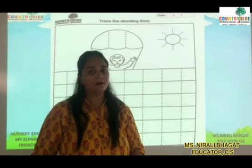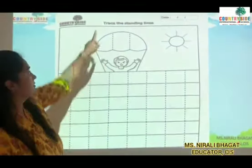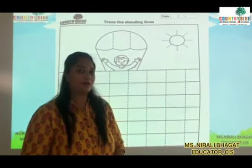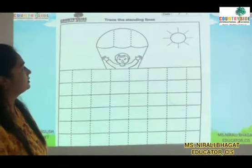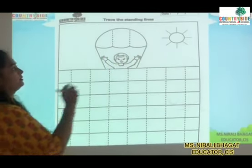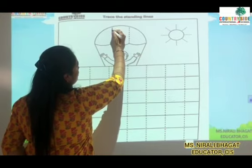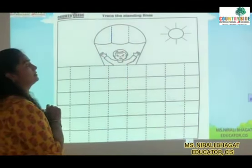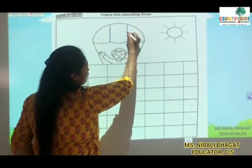Open page number 9. This is page number 9 — trace the standing line. So again we will do revision of standing line. You are in the parachute. You can see some dotted lines given. So we will join this line like this — dot to dot you will join.